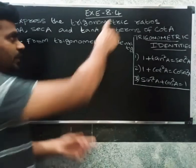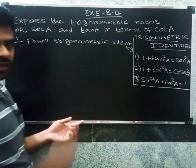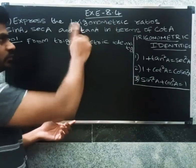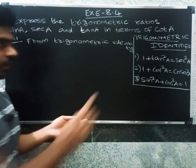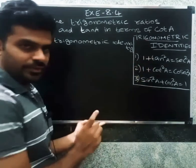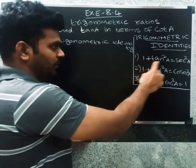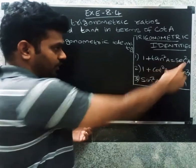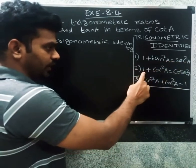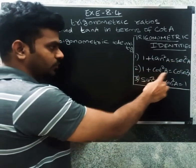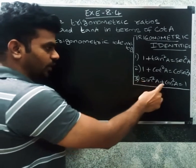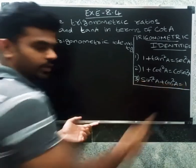Welcome. This is Exercise 8.4. The trigonometry identities: number one, one plus tan square a equal to secant square a; number two, one plus cot square a equal to cosecant square a; number three, sin square a plus cot square a equal to one.